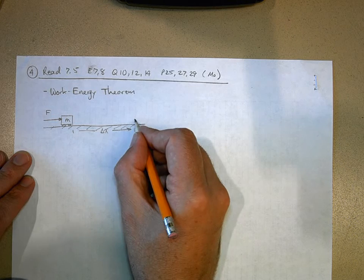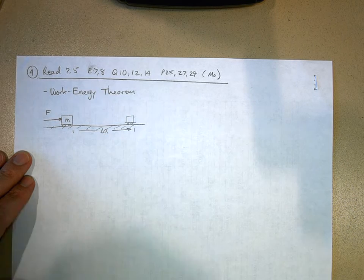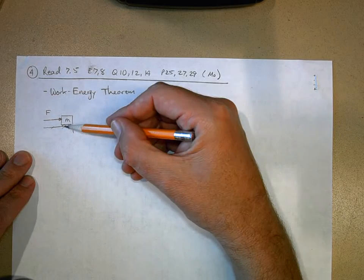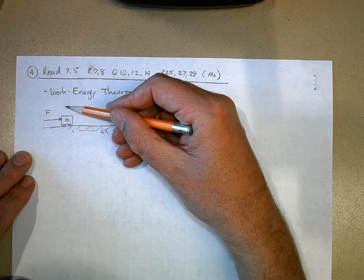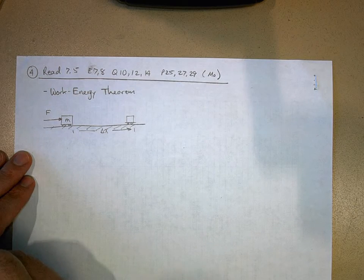Here we are at the end of this displacement. There's not going to be any friction in here. Obviously there's a weight, but it's canceled out by the normal force. So this is the net force acting on the object.